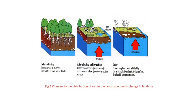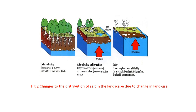Here we can see the changes to the distribution of salt in the landscape due to the change in land use pattern. This picture shows before clearing, the system is in balance and most water is used where it falls. After clearing and irrigation, evaporation and irrigation seepage concentrates saline groundwater at the surface. In the last stage, because of clearing of vegetation, protective plant cover is killed by the accumulation of salt at the surface and the land is open to erosion.